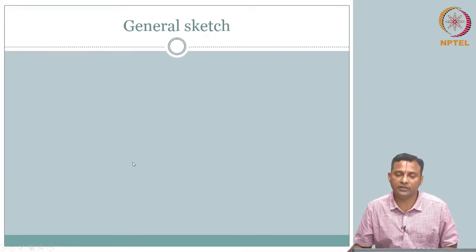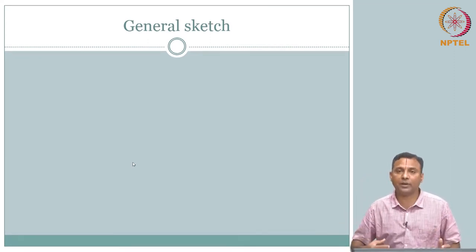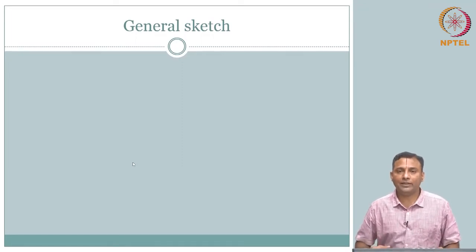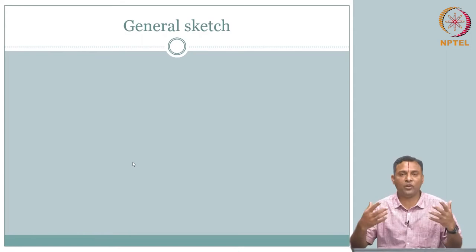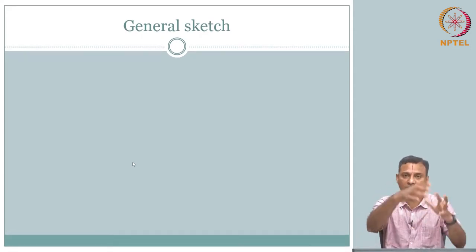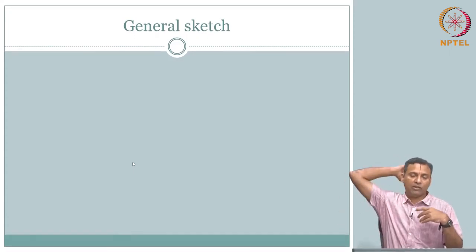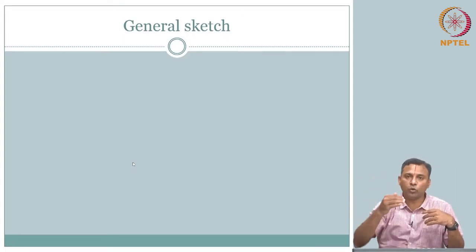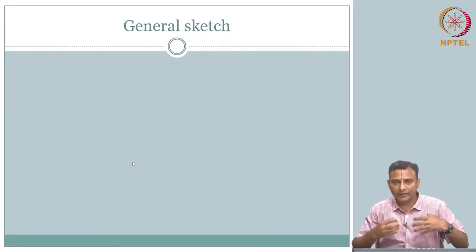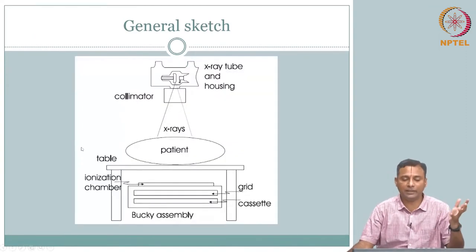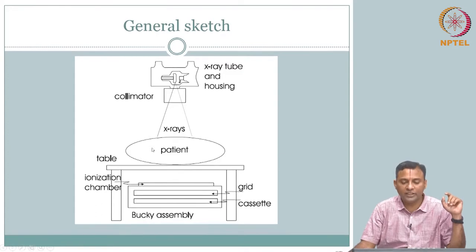Let us jump into instrumentation. When I talk about instrumentation I mean the imaging system instrumentation — the complete part. In our case, we have a source generating x-rays, a patient standing or lying in between, and we are talking about through transmission. So there is a source which generates x-rays, the x-ray is sent into the body, and we have detection behind the body. This is a through transmission setup.